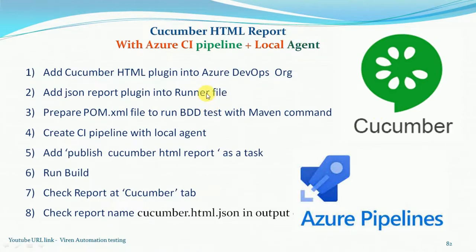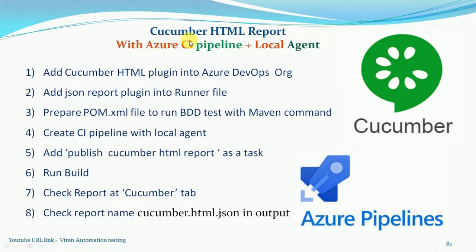Before that, we will discuss why the Cucumber HTML report is required. We have run some code and we want the evidence and the results. For that, we want a comprehensive report so that everyone can understand the test case execution part, how much time is taken, and the evidence. We can have screenshots attached in the Cucumber HTML report, and if we want to provide some custom data, application URL, or anything else, we can use the Cucumber HTML report.